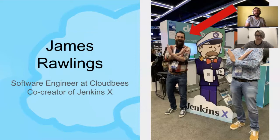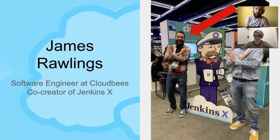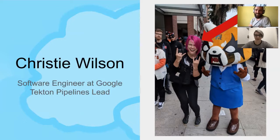Hello, everyone. My name's James Rawlings. I'm a software engineer at Cloudbees. I've been working for the last couple of years trying to build software to help developers build better software faster. And hey, everybody. I'm Christy Wilson. I'm a software engineer at Google, and I lead the Tekton Project. During my career I've worked in mobile, financial, and AAA games, and I always seem to end up gravitating towards CI/CD-related work, which Google has been no exception. I'm really excited about leading the Tekton Project.